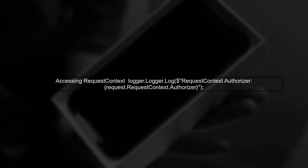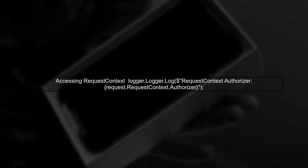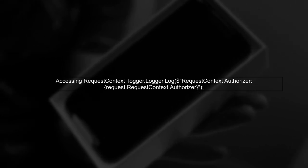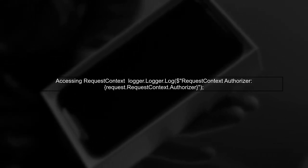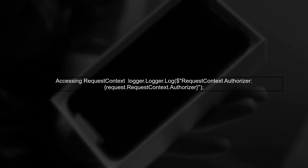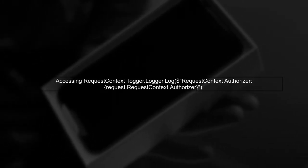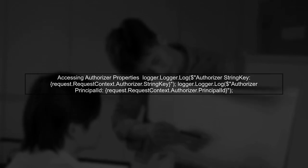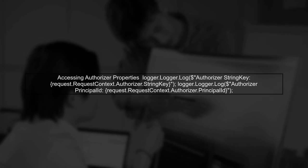Now, to access custom context or authorizer values, you need to look into the request context of the API Gateway proxy request. This is where the authorizer information is stored. In your case, you want to access specific properties of the authorizer, such as string key and principal ID. You can do this by navigating through the authorizer object.